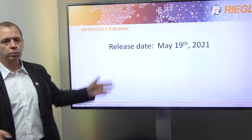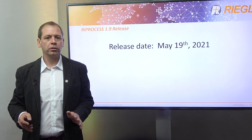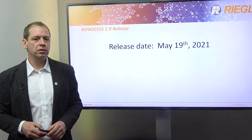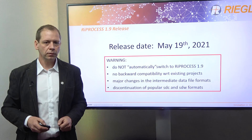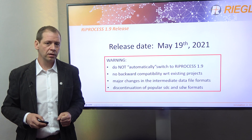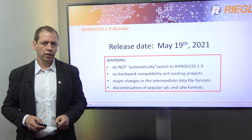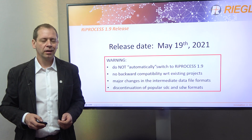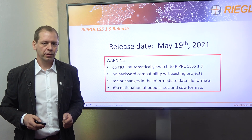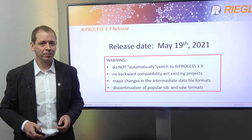Also, RIPROSIS 1.9 has been released today. The software is already available for download from our web page. But before you start to download and use the new software, please do not automatically switch from your previous version. Please note that there is no backward compatibility of new projects to earlier versions of RIPROSIS. There are a number of new intermediate data file formats, and at the same time, the popular SDC and SDW file formats have been discontinued. We are convinced that these improvements will mean an enormous gain for you, especially in terms of processing speed, efficiency of data storage, and the possibilities of accessing the data using your own or third-party software. Thank you for your attention.